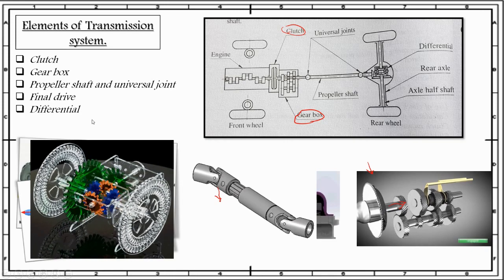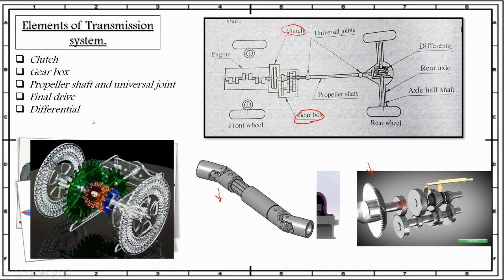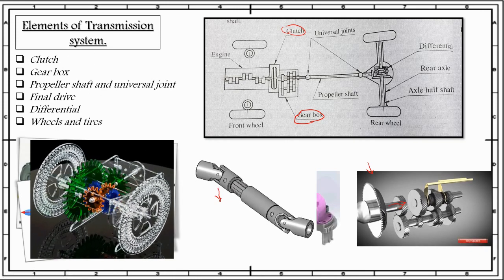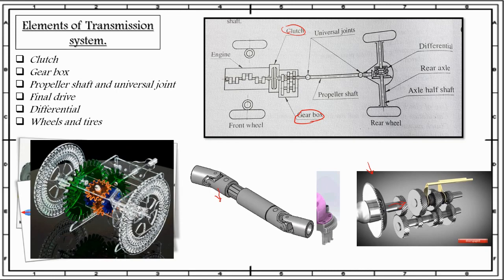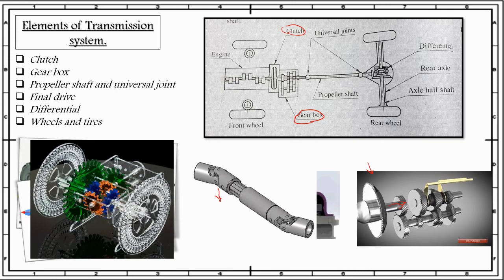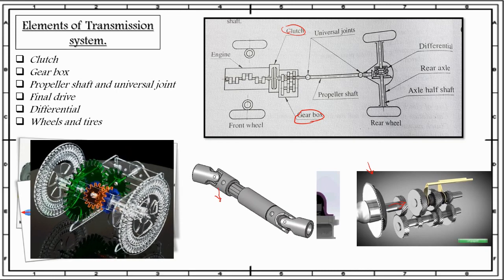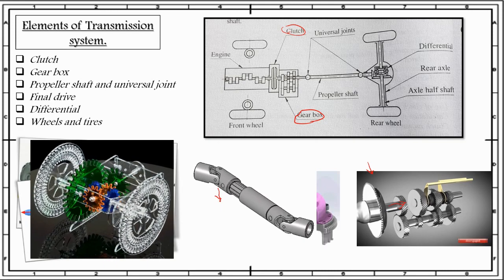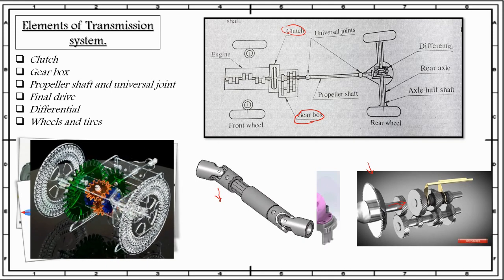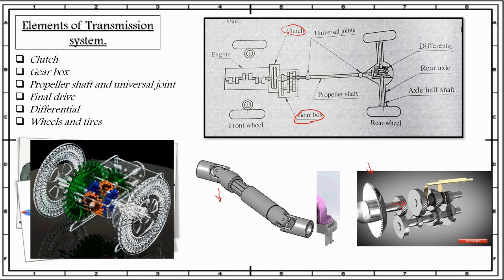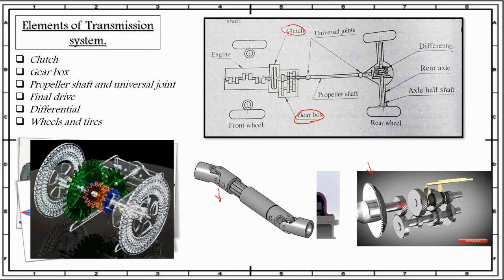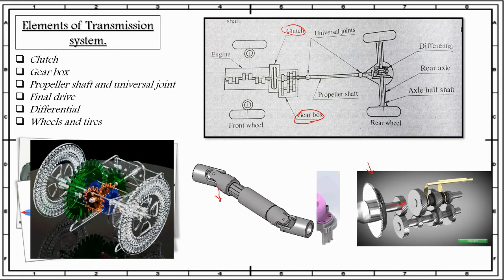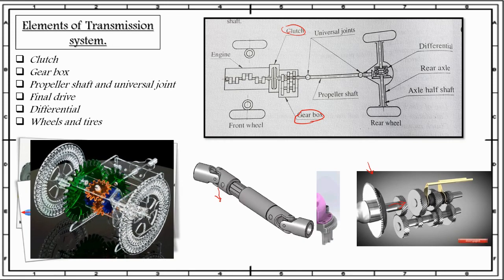The last element of the transmission system is the wheels and tyres. The wheels along with tyres of an automobile support the total weight, resist the strain created by turning, and transmit the driving torque for propelling and the braking torque for retarding.